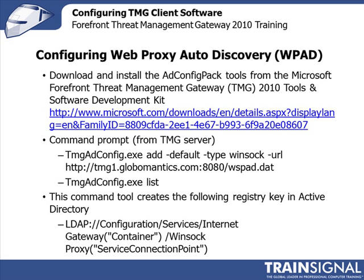In order to add the Active Directory marker, you have to download and install a tool called the ADConfigPack from the Microsoft Forefront Threat Management Gateway 2010 Tools and Software Development Kit. The link is on your screen. You extract the contents of that tool set and install it. Inside there is a tool called tmgadconfig.exe. You run tmgadconfig.exe with the command you see on your screen, and this will add the AD marker with the appropriate information needed for clients to use Web Proxy Autodiscovery. Then you can use the list command with tmgadconfig.exe to verify that it was actually added.